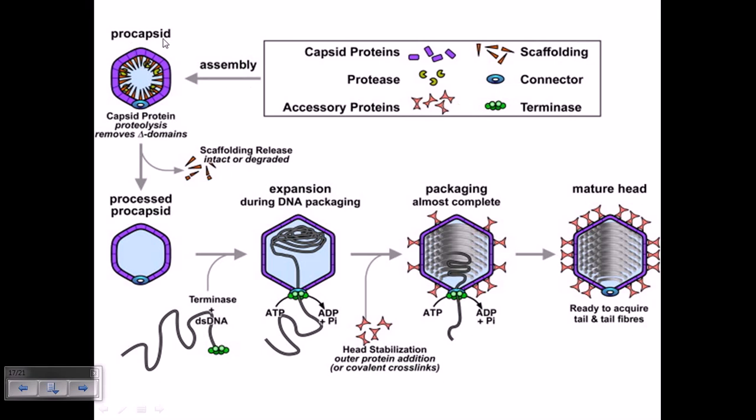In the formation of procapsid, it requires capsid proteins which will be arranged outside, then the accessory and scaffolding proteins. Scaffolding proteins guide the accessory proteins to attach with each other to make an inner core, and then capsid proteins are added to the outer